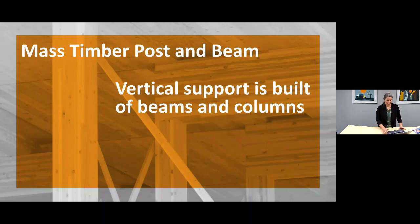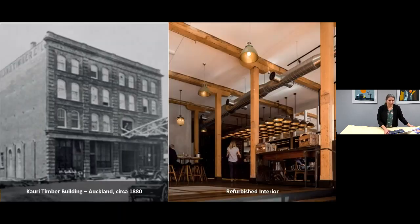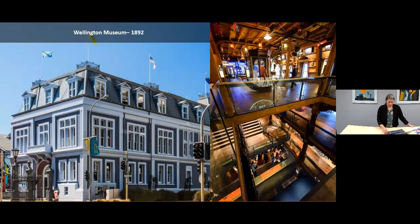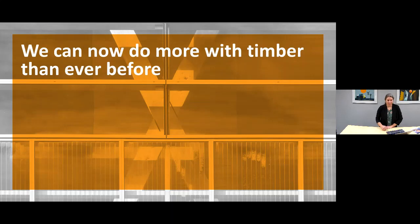So what do I mean by post and beam? Very simply, post and beam construction refers to a system where a building's vertical support is built of beams and columns rather than walls. This allows for large, open and flexible spaces to be created, which are often desired for commercial buildings. This is nothing new — post and beam construction has been used for hundreds of years and many of these buildings are still in use. For instance, the Kauri Timber Building in Auckland on Fanshawe Street, originally on the shoreline and built to serve the thriving logging industry. Or the Wellington Museum on Queen's Wharf, which was originally a Wellington Harbour Board building. And now with the development of engineered wood products and connections, we can do even more with timber than ever before.